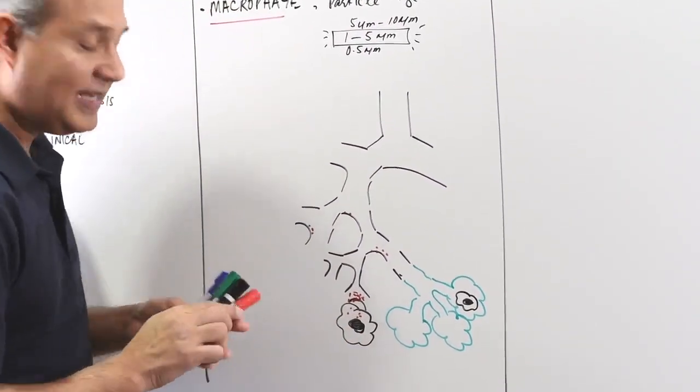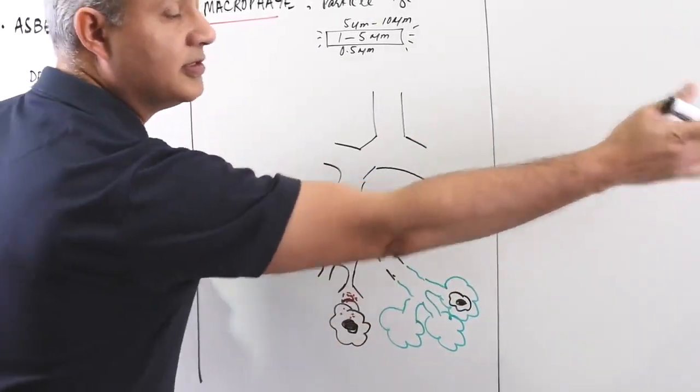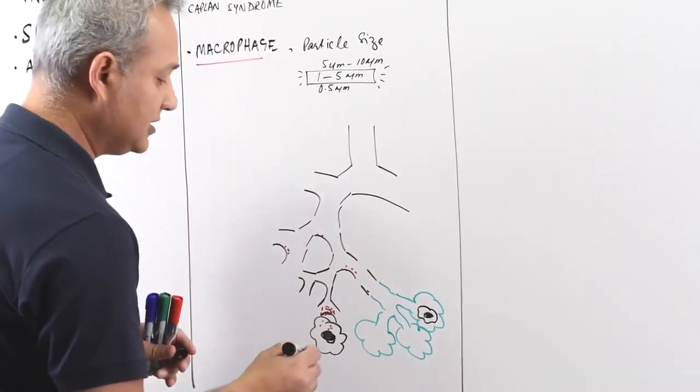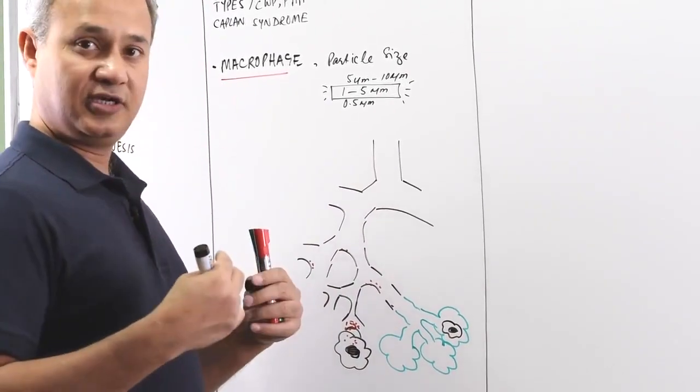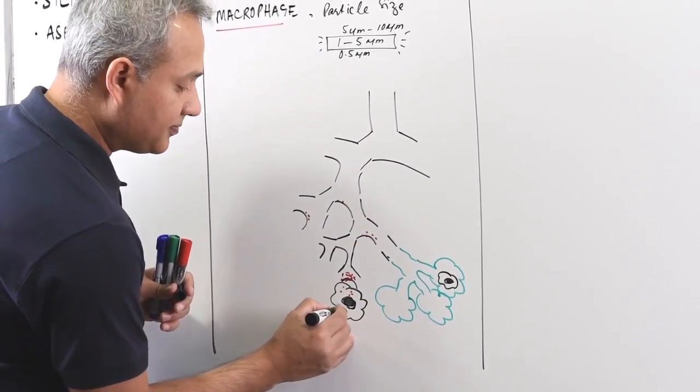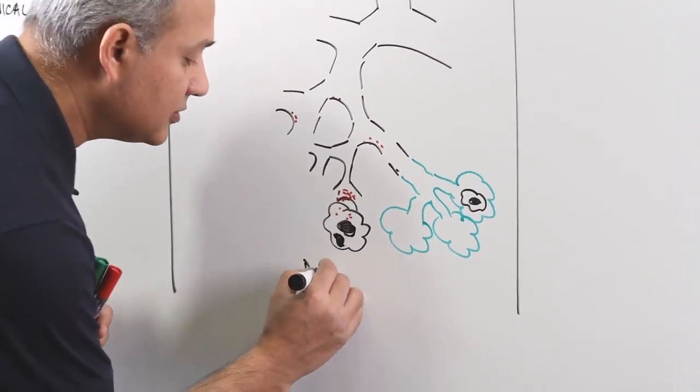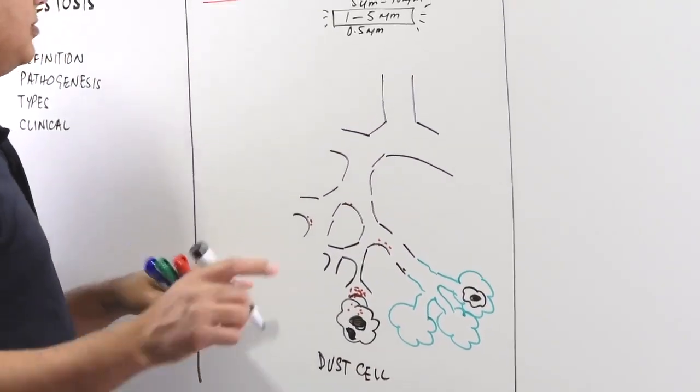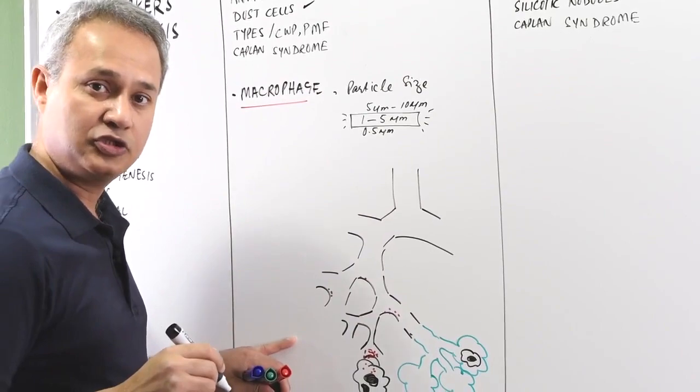Now, macrophage, once it eats up the particle, it can go through multiple events. In some cases, for example, here in the coal miners disease, macrophages are actually happy. It eats up the coal, digests it, and sometimes that coal just gets stuck in it. And now this macrophage has become a dust cell. So remember here, dust cells are important to keep in mind from the coal miners pneumoconiosis.